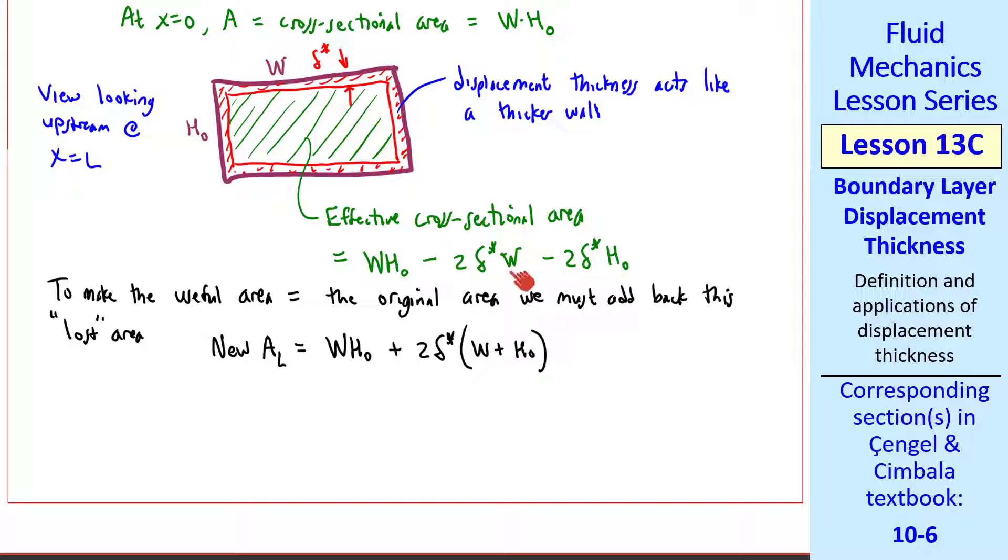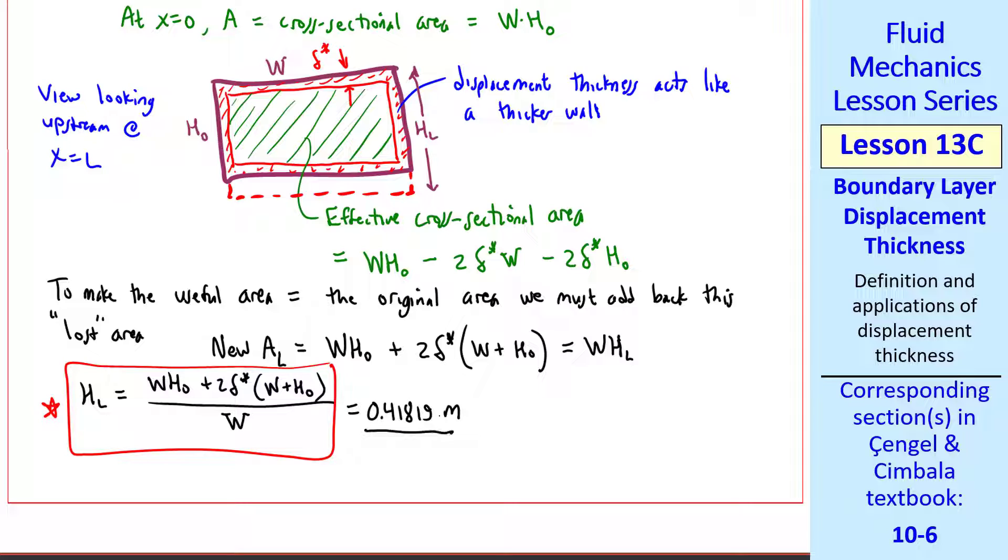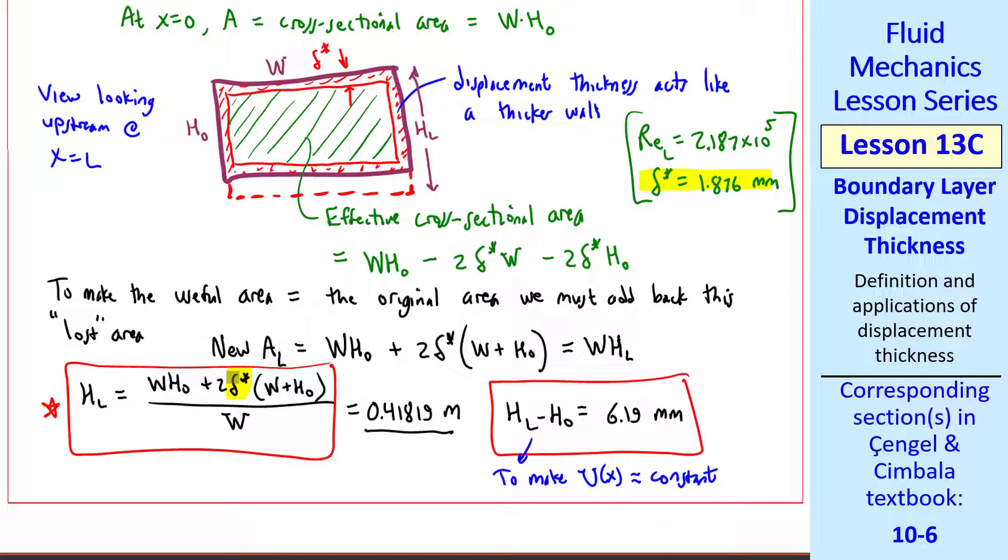The new cross-sectional area at L is thus the original cross-sectional area plus 2 delta star W plus H0, where I combined these two terms and added them back into the new area. In our cross-sectional view, this height is HL. And we account for all four walls by expanding the lower wall to height HL. So this new expanded area is WHL. Finally, we can solve for HL by dividing by width W. This is our answer in variables. When we plug in the numbers, we get 0.41819 meters. And H has increased by 6.19 millimeters. This is the difference in height between the beginning and the end of the test section to make u of x approximately constant. I didn't show all the math, but for this problem, REL was 2.187 times 10 to the 5, from which delta star is 1.876 millimeters. This is the value I plugged into this equation to generate our answer.